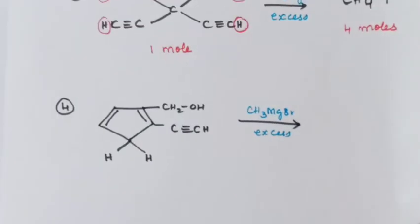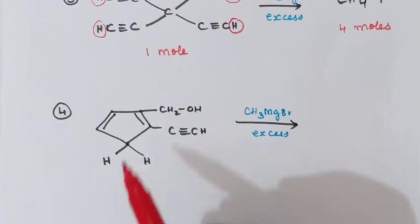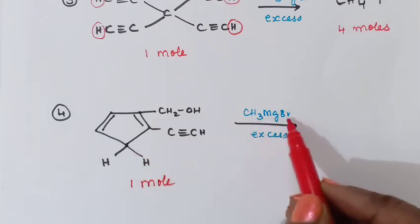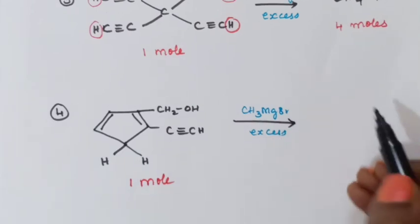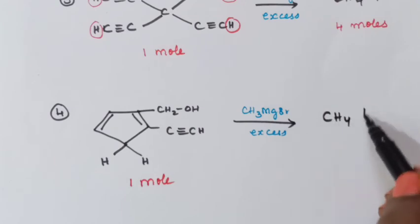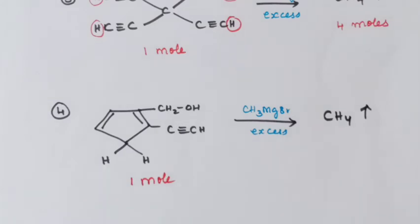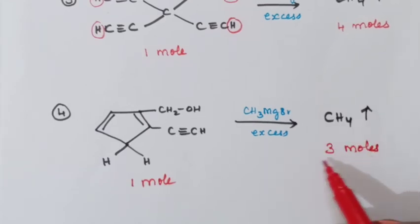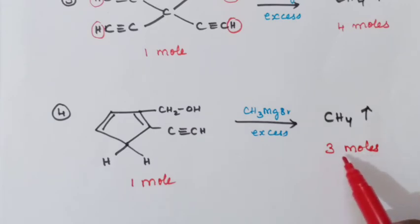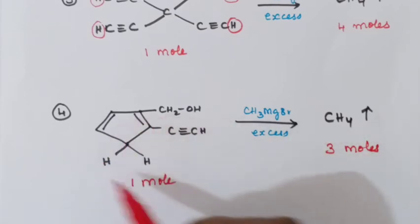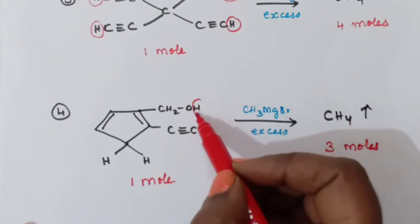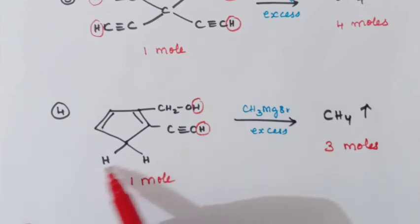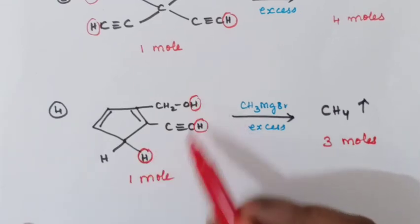Next example: take one mole of the compound and treat with methyl magnesium bromide taken in excess. The product is methane gas. Here you will get three moles of methane gas. If three moles are evolved, three acidic hydrogens are present in the compound. Those three acidic hydrogens are: one, two, and a third one — out of the two hydrogens on a particular group, only one is acidic.